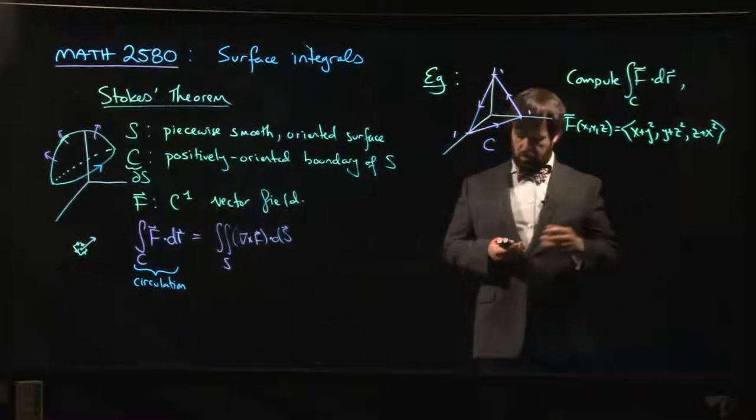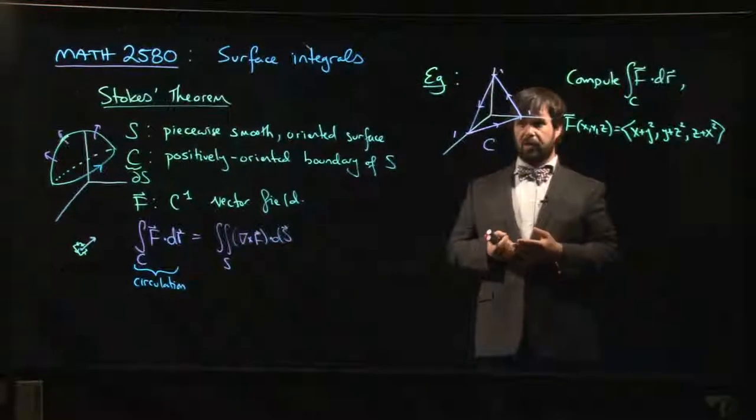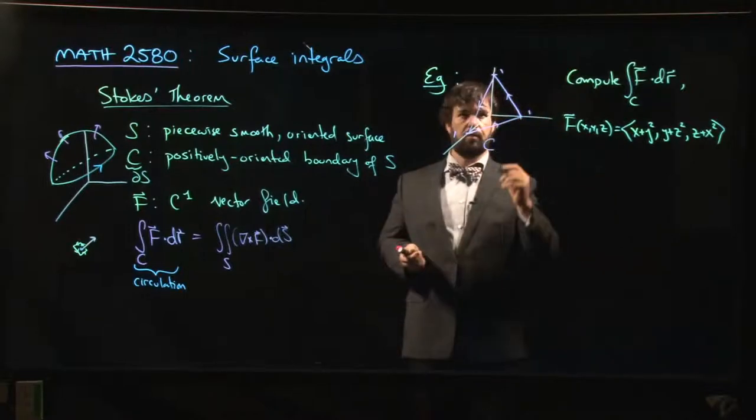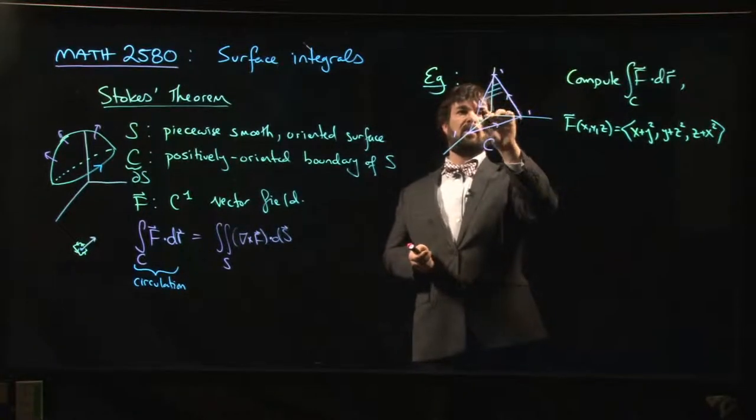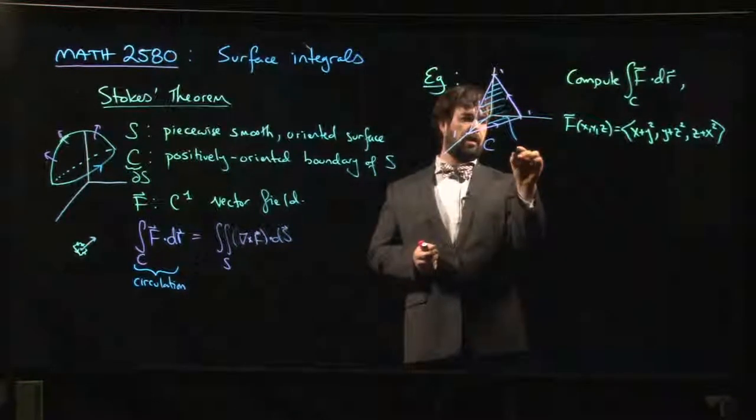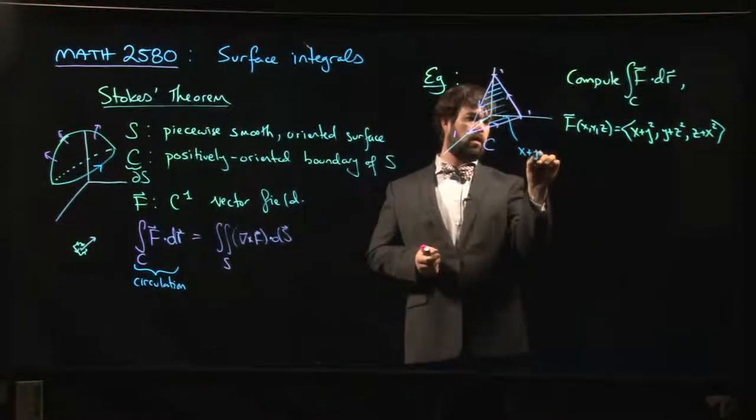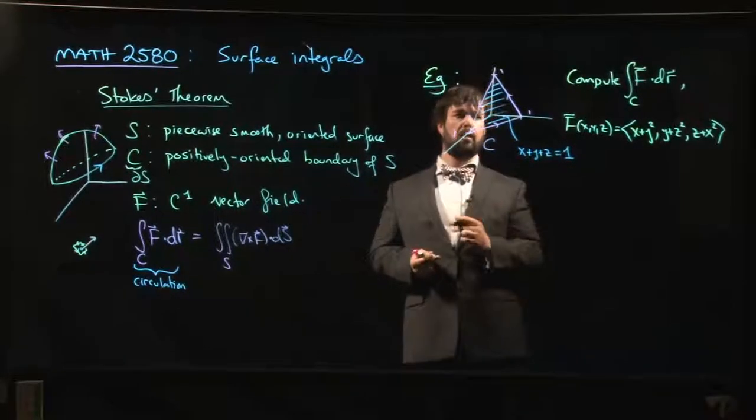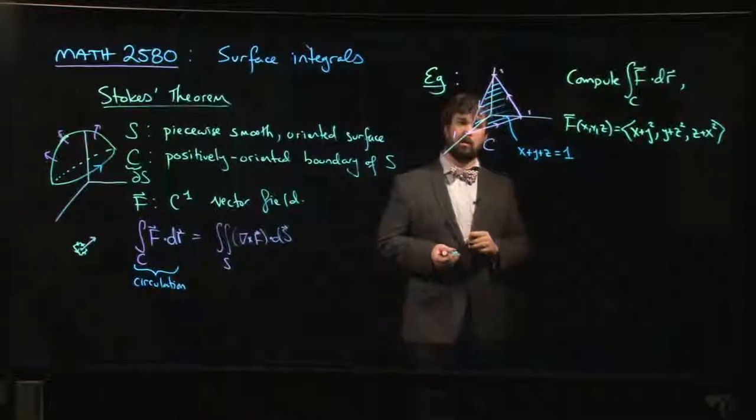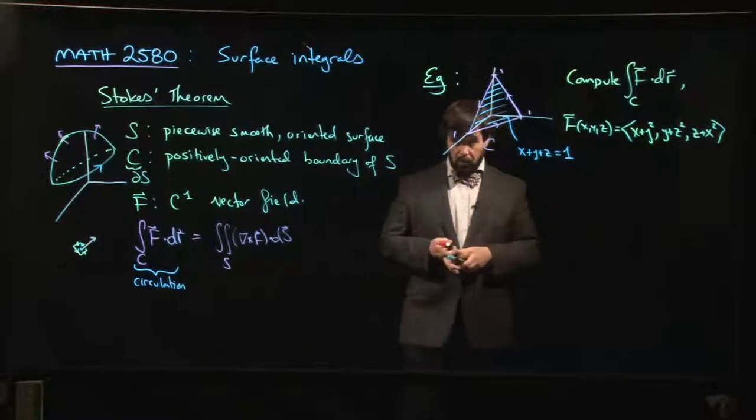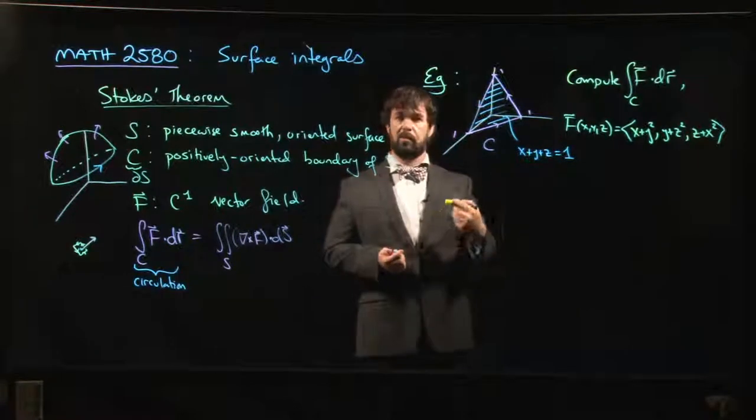So one of the things you might do is you might say, well, the curve is closed, so that curve does bound a surface. It bounds this plane. We know what that plane is: it's x + y + z = 1. So we know that we have that surface there being bounded by the curve.